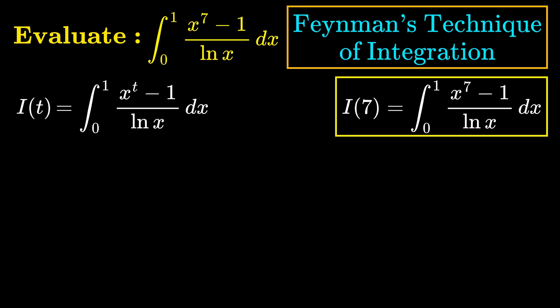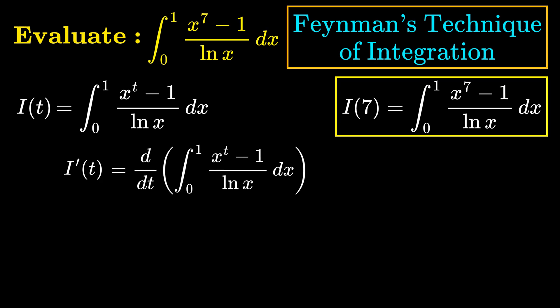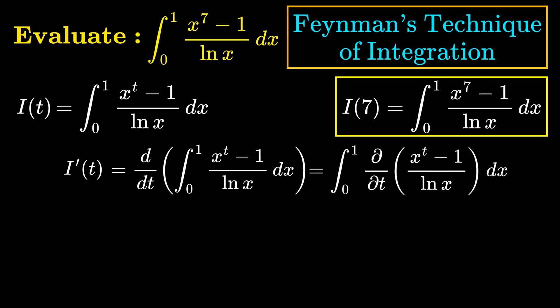Now we can apply Feynman's technique of integration: we take the derivative of I(t) with respect to t. Since the function that we are integrating is continuous over the interval 0 to 1, we can interchange the integration and the differentiation, taking the partial derivative with respect to t of (x^t - 1) / ln(x).